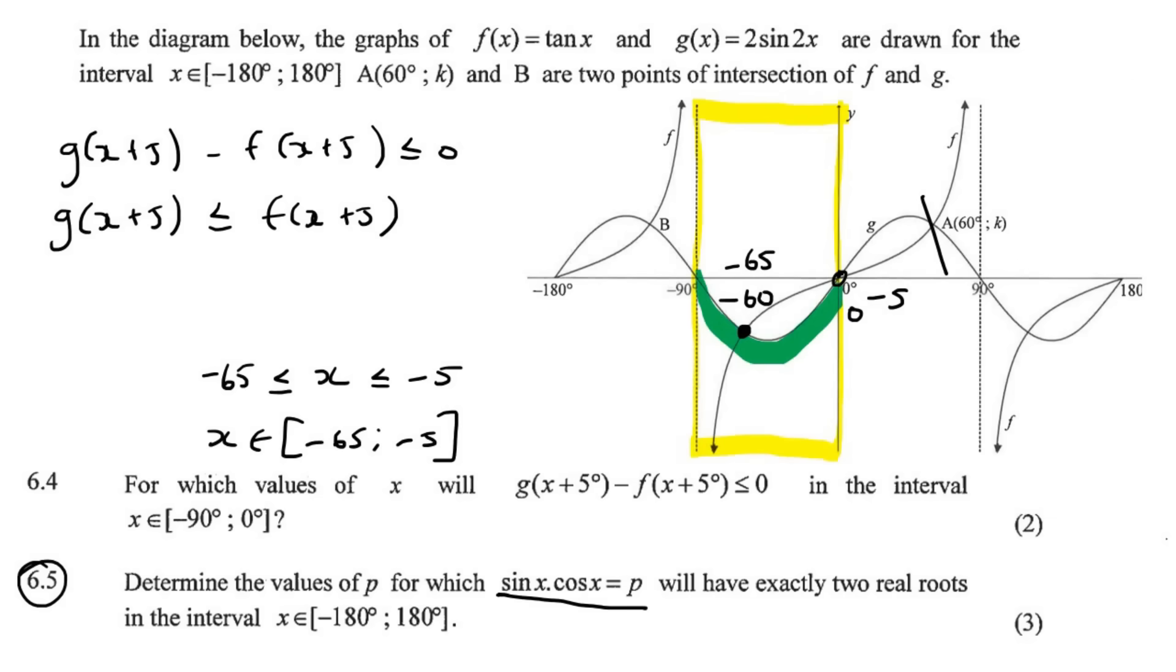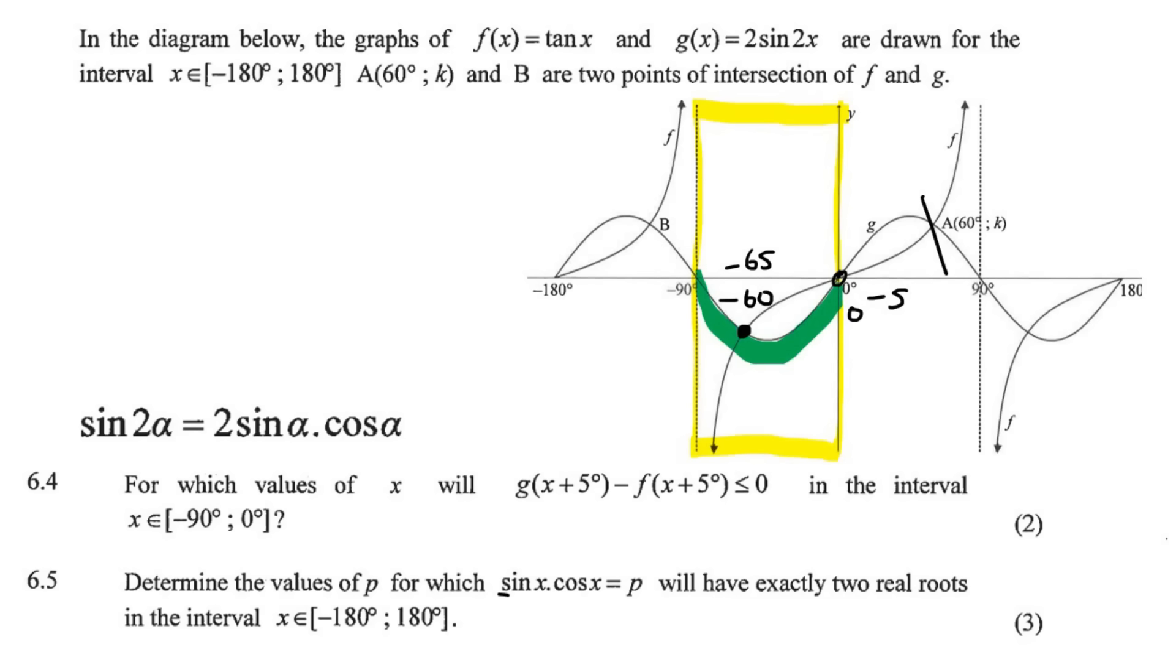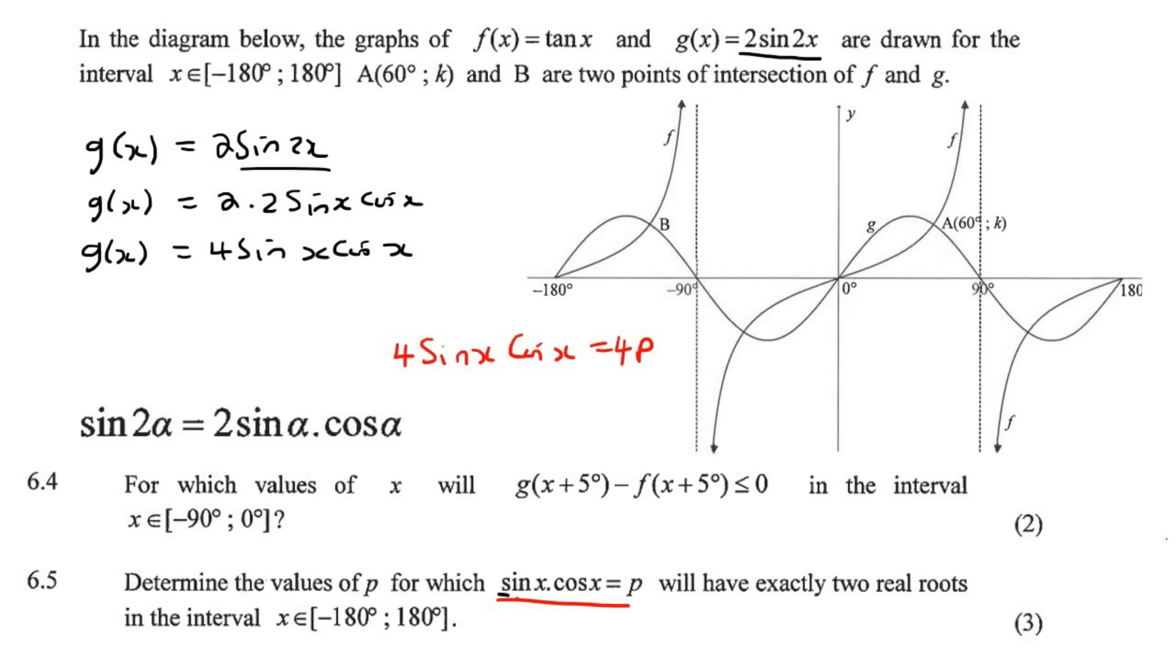But what we can do is, let's try this question. So it says, let's just work on this quickly. I can see here there's a sin2x. Now we know that that is a double angle. So what I'm going to do is, I'm going to start working on this a little bit. So I'm going to say g of x is equal to 2 sin of 2x. Then I'm going to say g of x is equal to 2. And then I'm going to change the sin2x into this. So that's going to be 2 sin x cos x. And then that's going to be g of x is equal to 4 sin x cos x. And then what I'm going to then do is take this expression, sin x cos x equals to p. And I'm going to multiply both sides by 4.